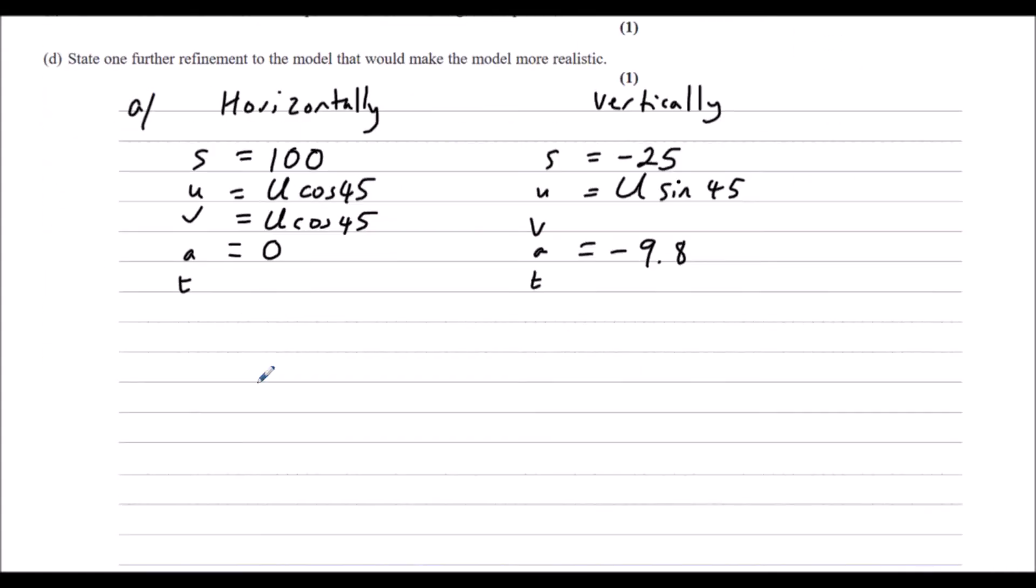So we need to work out u. The time must be the same for both of those, so let's use that. And let's do S equals UT plus half AT squared for both of them. For horizontally, it's just S equals UT because A is zero. So 100 equals u cos 45 times T. For vertically, S equals UT plus half AT squared. So negative 25 is U sin 45 times T plus half of minus G times T squared.